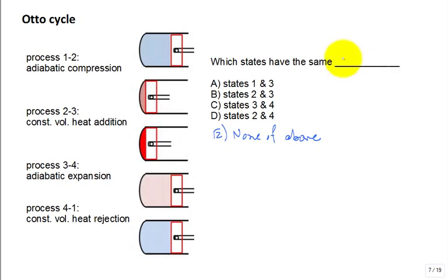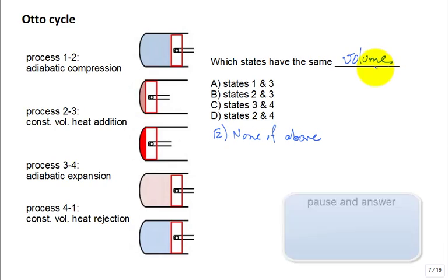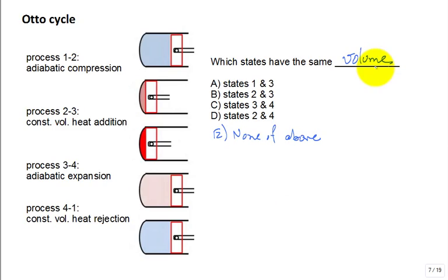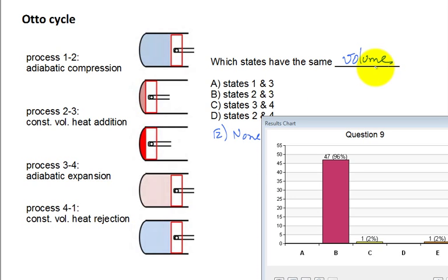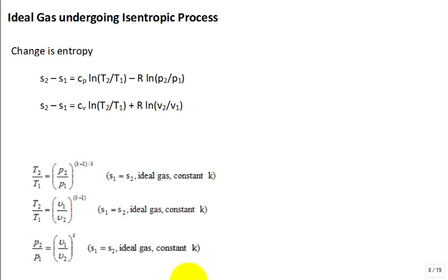Which states have the same volume? State one and three, two and three, three and four, or two and four? The process between two and three — two to three — was constant volume heat addition, so states two and three have the same volume. For an ideal gas undergoing an isentropic process assuming constant specific heats, you can evaluate the change in entropy using this equation.